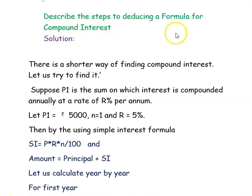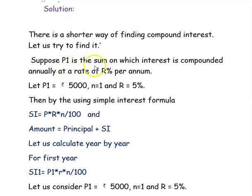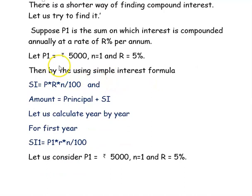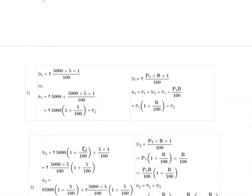The next question is: describe the steps to deducing a formula for compound interest. There is a shorter way of finding compound interest. We will take P1 as the sum on which interest is compounded annually at the rate R percent per annum. Let us consider P1 be Rs. 5000, number of years is 1, and R is 5%. Then by using the simple interest formula — SI = PNR divided by 100 — and the final amount will be principal plus simple interest. We are moving to finding the formula year by year.